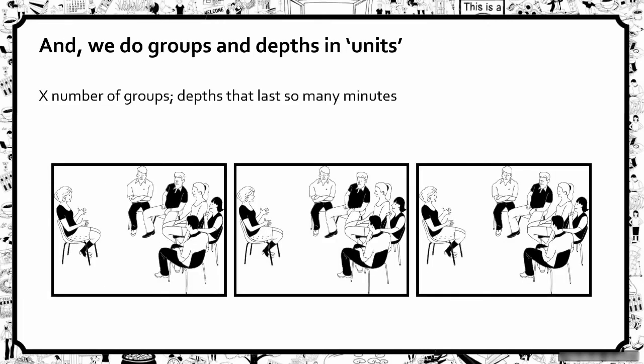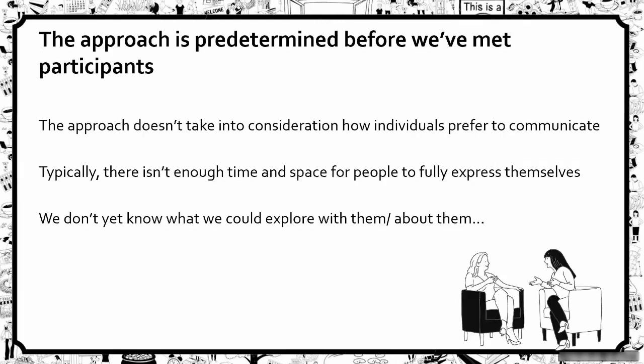Those constraints lead qualitative researchers to come up with methodologies that are almost in units. Rather than just explore openly, we end up saying we'll do a set number of groups or depth interviews, online or in person, for an hour and a half or two hours. We're essentially predetermining the research before we've even met our participants.